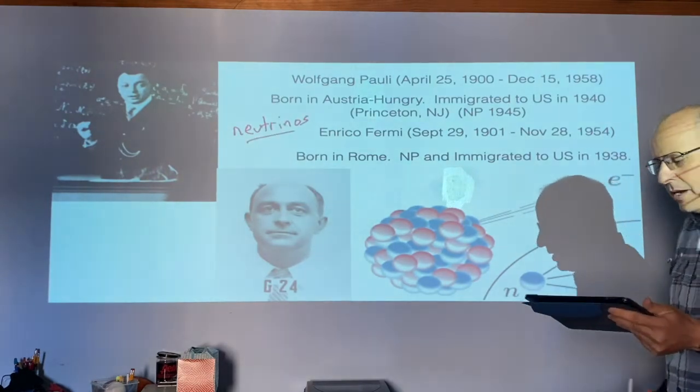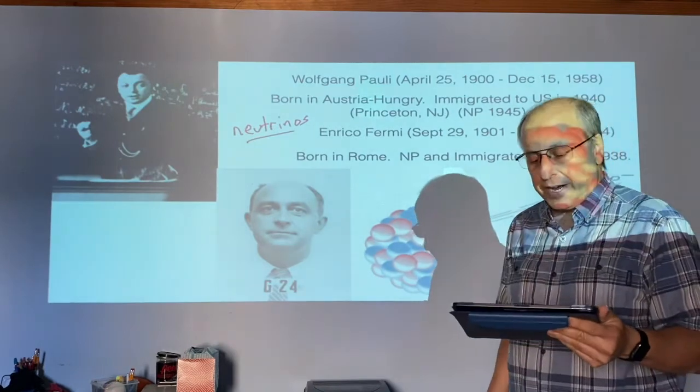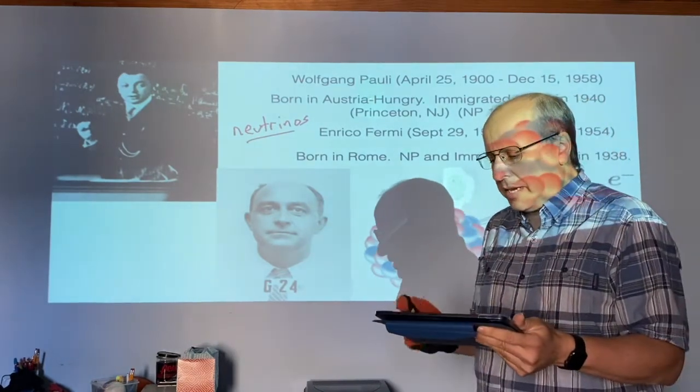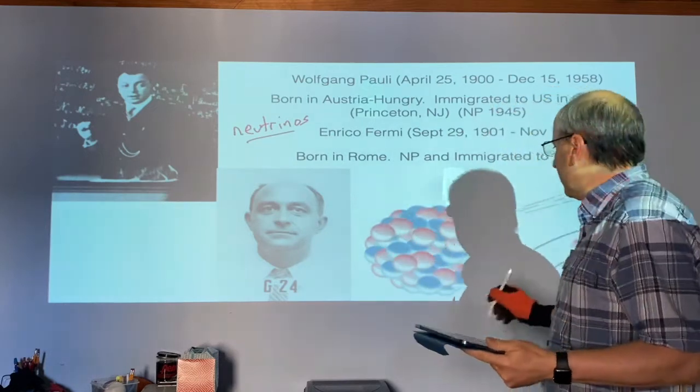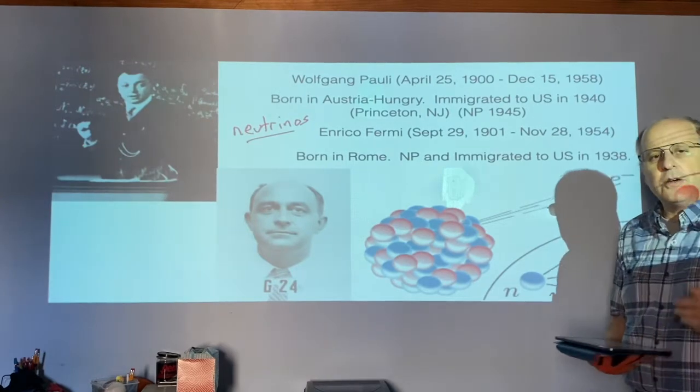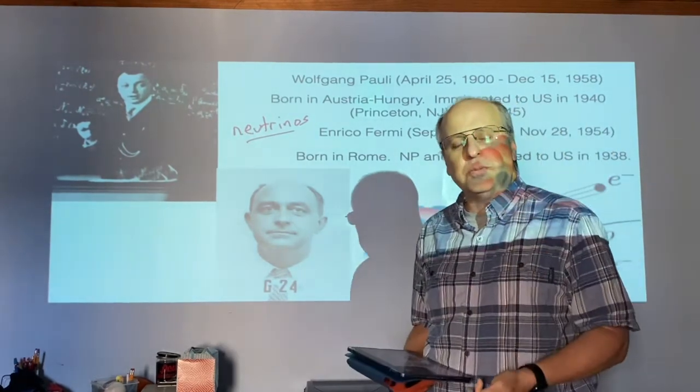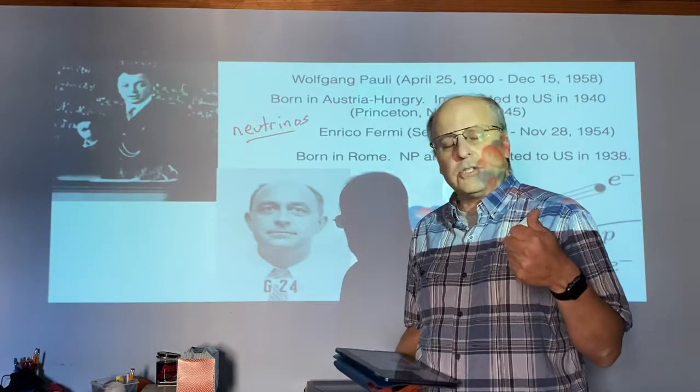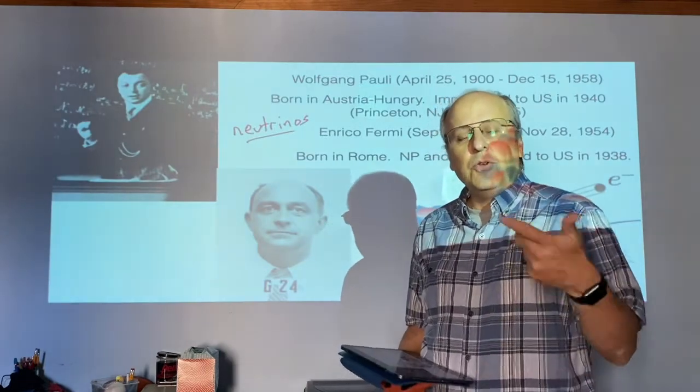And the neutrino is something that happens during beta radiation. When we were looking at beta radiation and we saw a neutron turn into a proton with an electron coming off, people realized that even though things were conserved that were supposed to be conserved, things like charge, nucleon number.